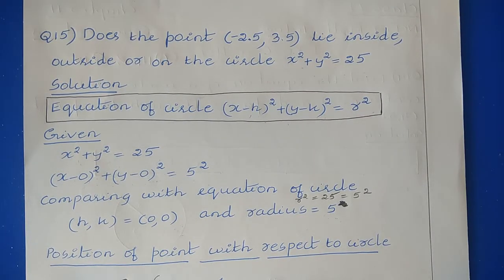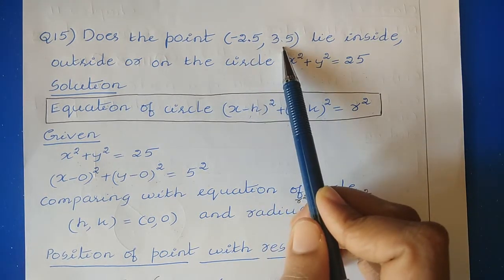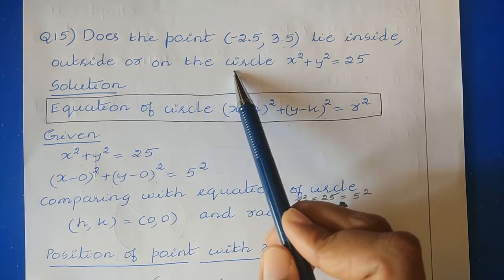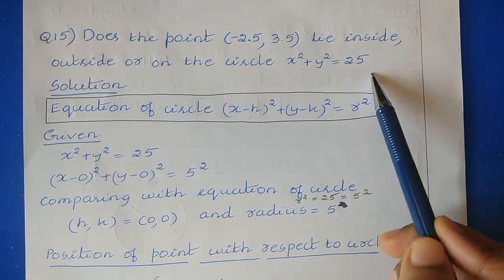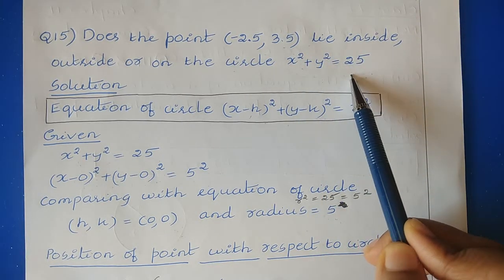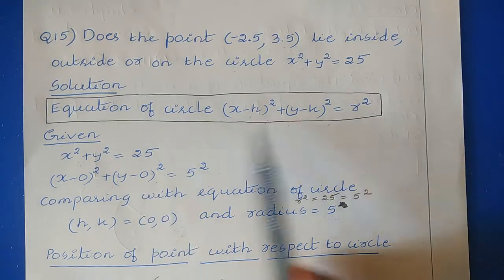Question 15: Does the point (−2.5, 3.5) lie inside, outside, or on the circle x² + y² = 25? In this question they have given a point and we have to decide whether it is inside, outside, or on the circle. The equation of the circle is also given. Comparing it with the general equation will help us find the radius and center.